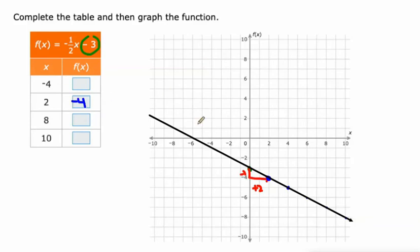And let's complete our table. So, negative 4. When x is negative 4, y is negative 1. And if you think about that, negative 4 times negative 1 half is positive 2. And 2 minus 3 is negative 1.